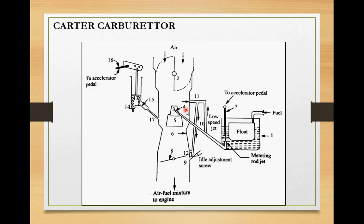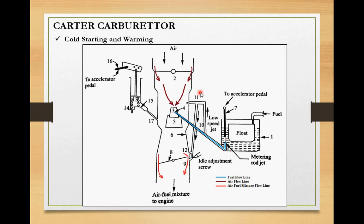Now this is the diagram of a Carter carburetor. As we can see, it is a simple carburetor with some additional attachments. These attachments come into picture under various conditions. I have given color coding for better understanding: blue color indicates fuel flow, brown color indicates air flow, and red color indicates air-fuel mixture flow.